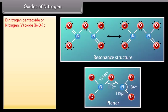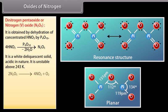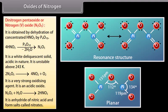Dinitrogen pentoxide (N2O5, nitrogen 5 oxide) is obtained by dehydration of concentrated HNO3 by P4O10. It is a white deliquescent solid, acidic in nature, and unstable above 243 Kelvin. It is a very strong oxidizing agent — many organic substances burst into flames on contact with it. It is the anhydride of nitric acid and forms salts called nitrates.